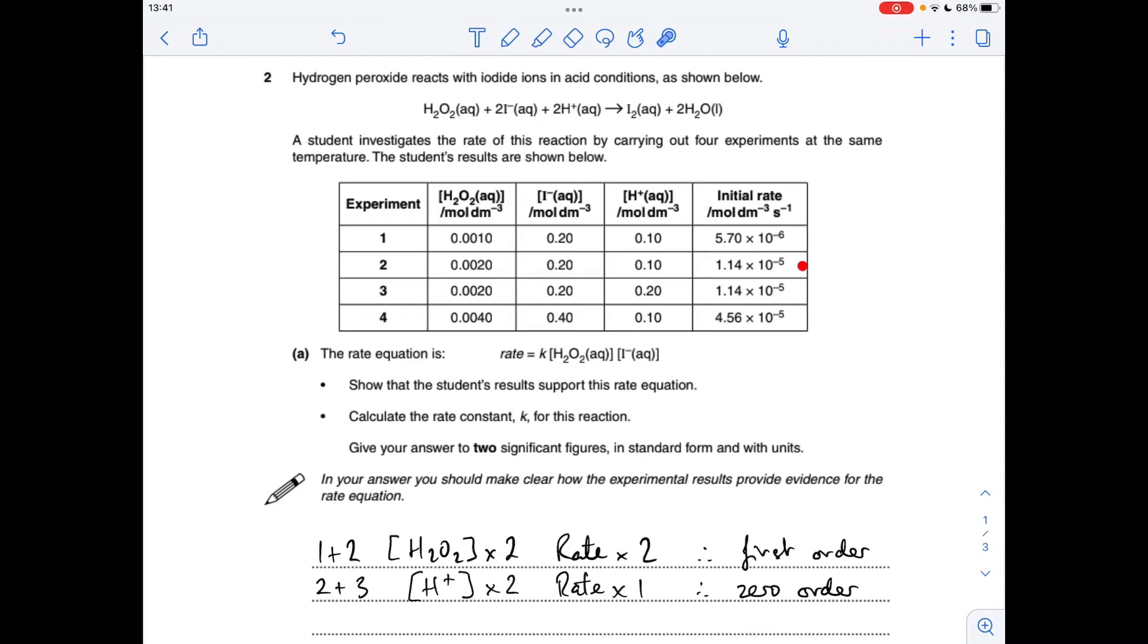So if we have a look at the overall rate change, it's actually gone up four times. So that means that both of these reactants must be first order because the hydrogen peroxide has doubled. We know that that's first order, so 2 to the power of 1 is 2. So that would cause a doubling in the rate.